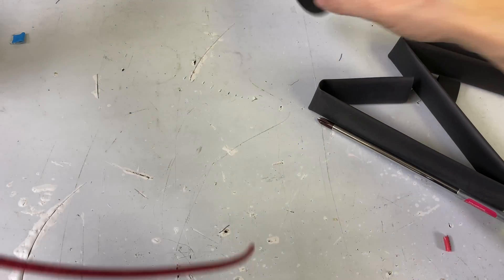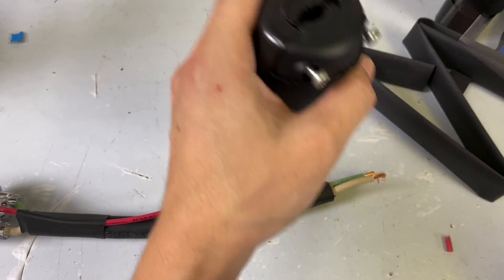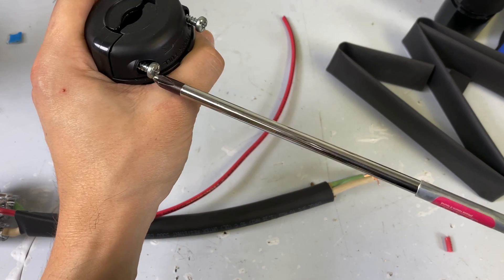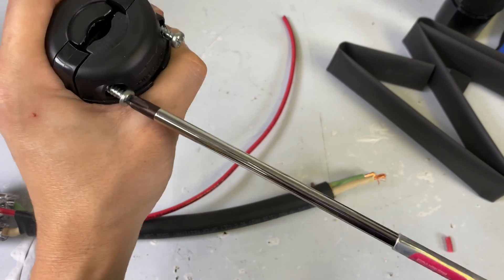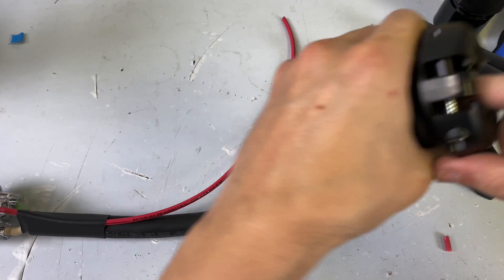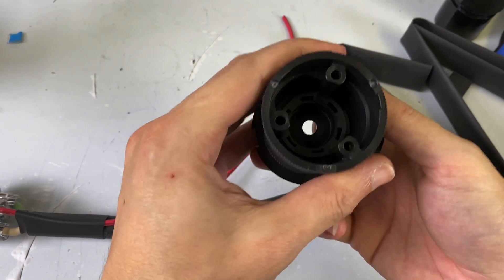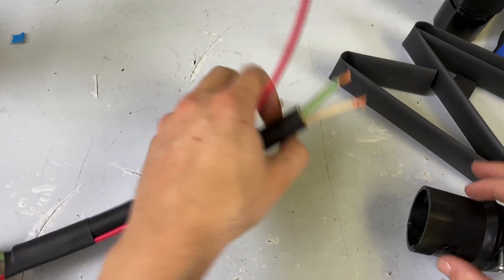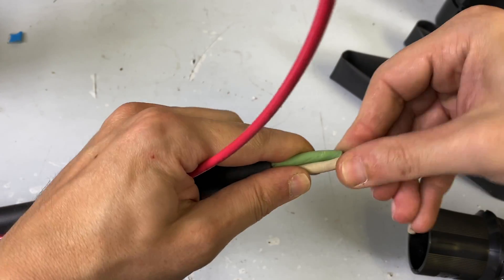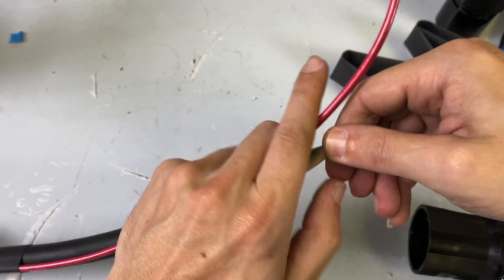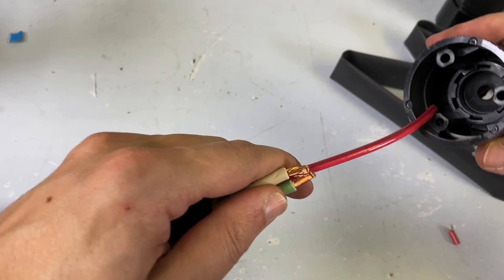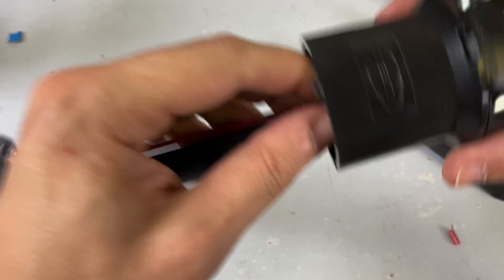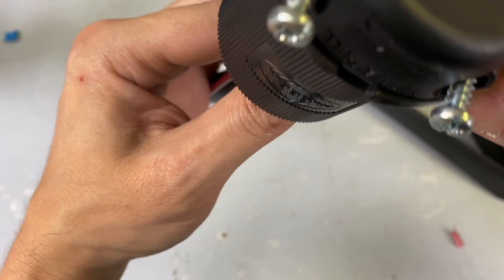So we're going to grab the back portion of our connector. Just loosen these guys up. Push that out. So these larger Hubble connectors do have a little rubber boot in here. So I like to take the, because I probably shouldn't have stripped this. I'm sure you're all thinking that. Why did you strip that? And I thought, well, I'm going to save it. I'm going to save time on camera.